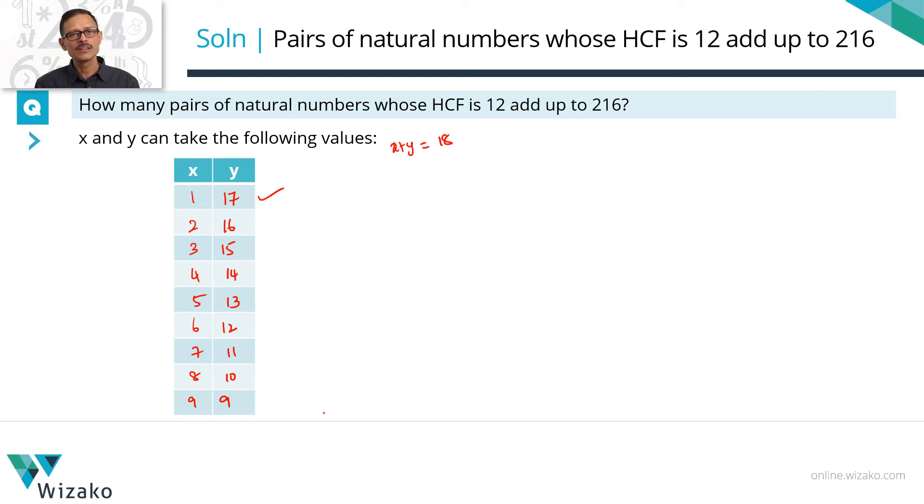1 and 17, HCF is 1. 2 and 16, the HCF is 2, so this is not going to work. If the HCF here is 2, the final HCF will not be 12, it will actually be the product of this HCF and 12. So we want the HCF of those two numbers to be 12, so this is not going to work.